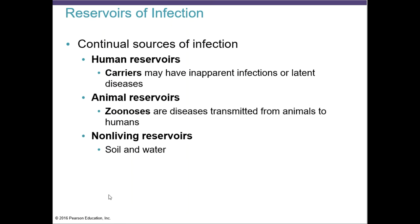Reservoirs of infection are the source from which a microbe infects a new host. It can come from human reservoirs, where humans are carriers of the infection — which could be inapparent or latent. For example, HIV passes from one person to another through blood or sexual intercourse, and humans are the reservoir. You don't get HIV from another source.